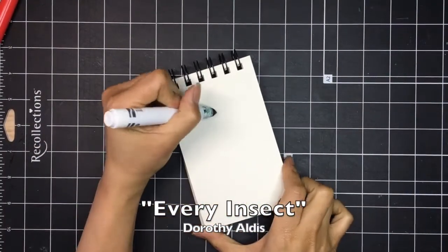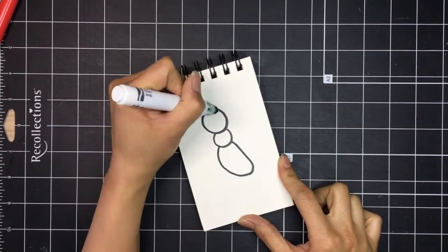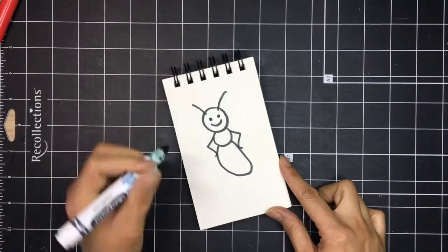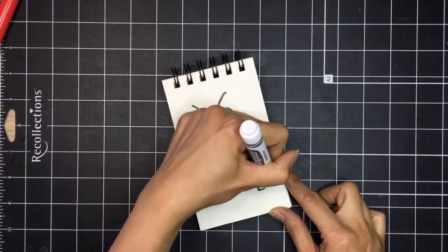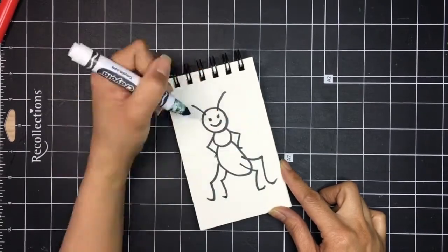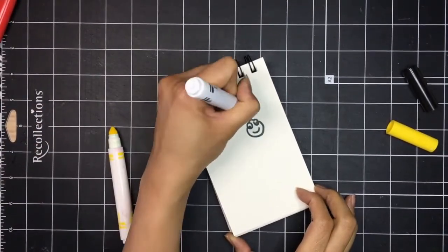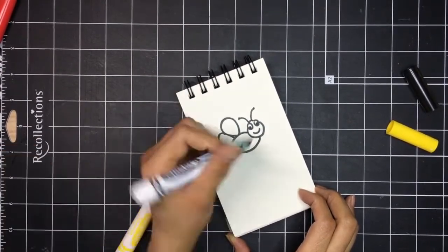Every insect by Dorothy Aldis. Every insect, ant, fly, bee, is divided into three. One head, one chest, one stomach part. Some have brains. All have a heart.